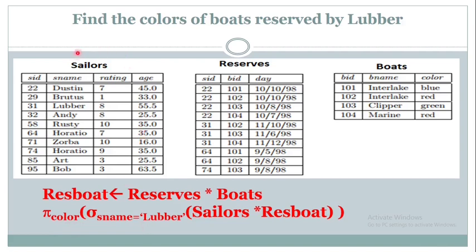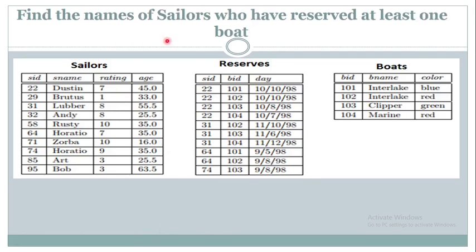One important thing: in the Sailor table we have information about all sailors. Some sailors — like the ones with SID 85 and 95, Art and Bob — don't reserve any boat. So if I want the names of the sailors who have reserved the boat, I need to join Sailors and Reserves. The final resultant relation is the colors of boats reserved by Luber. Let us solve the next problem: Find the names of the sailors who have reserved at least one boat.